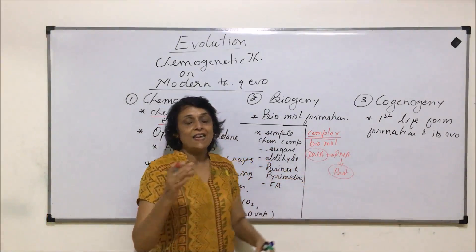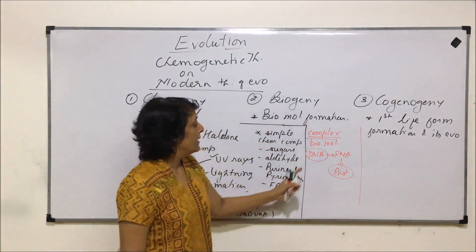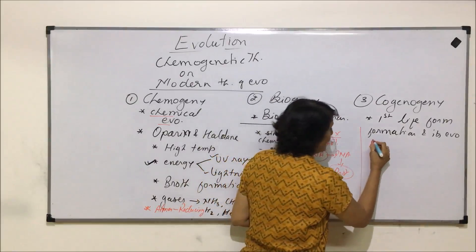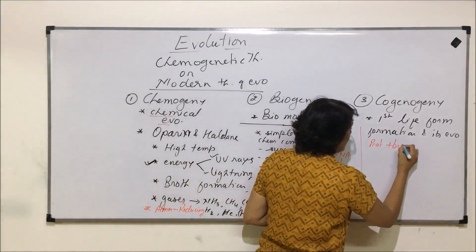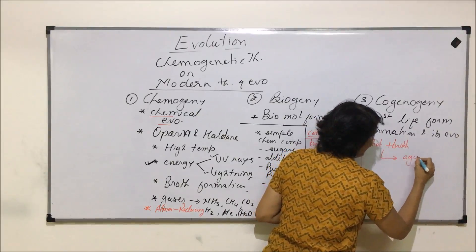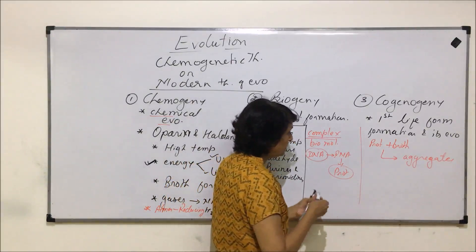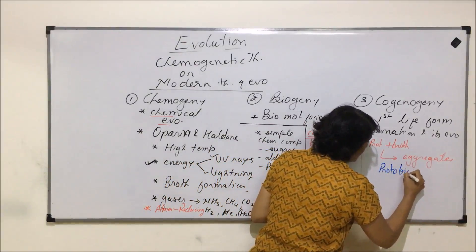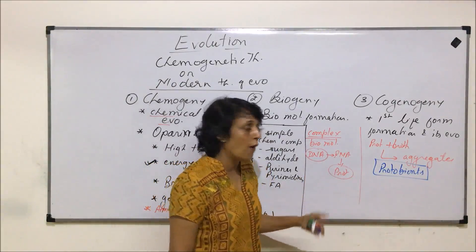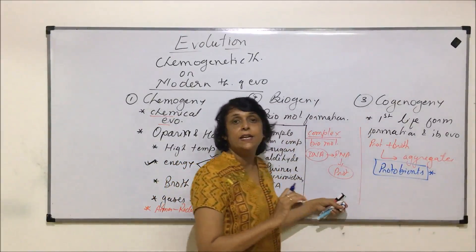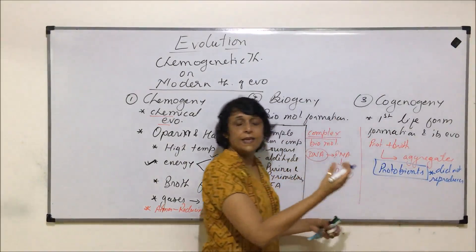After this, when life actually originated, in the case of cogenogeny, scientists believe that these proteins plus the broth — that means all the substances dissolved in the water — must have formed some aggregates. These aggregates of biomolecules were called protobionts. These were the first aggregates of these biomolecules believed to be formed. The only thing was these aggregates did not show reproduction, so they did not reproduce.